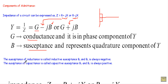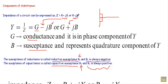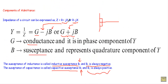Susceptance can be classified into two types. The susceptance of an inductance is called inductive susceptance, expressed as BL, and BL is always negative. The susceptance of a capacitance is called capacitive susceptance, expressed as BC, and BC is always positive. Taking the reciprocal of R plus jX gives G minus jB, confirming inductive susceptance is negative, while the reciprocal of R minus jX gives G plus jB, confirming capacitive susceptance is positive.